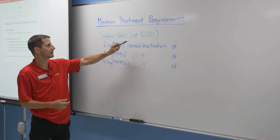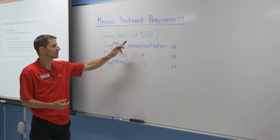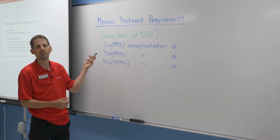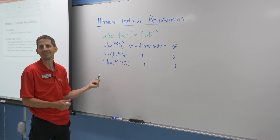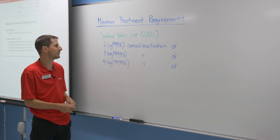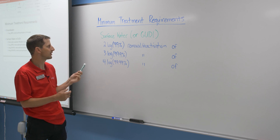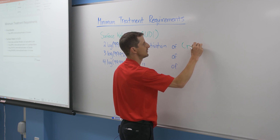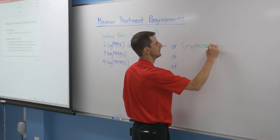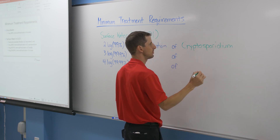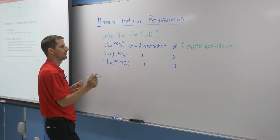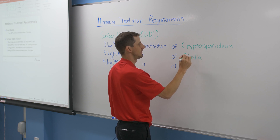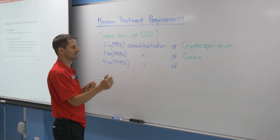For surface water, or GWUDI — groundwater under direct influence of surface water — we have to follow these treatment requirements. We need chemically assisted filtration, and this table says we need chemically assisted filtration plus removal of three bugs. The three bugs we need to remove are cryptosporidium — some people call it crypto — which is that big protozoa that really showed up in the 1990s with a lot of outbreaks. The second is Giardia lamblia, otherwise known as beaver fever, another protozoan. And the last one is viruses.